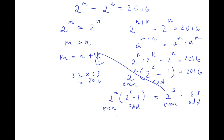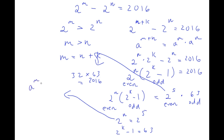Now this gives us two equations. We have 2 to the power of n equal to 2 to the power of 5, and 2 to the power of k minus 1 equal to 63. I essentially set the even numbers equal to each other and the odd numbers equal to each other. For 2 to the power of n equal to 2 to the power of 5: if a to the power of m equals a to the power of n, then m equals n. So n is equal to 5.